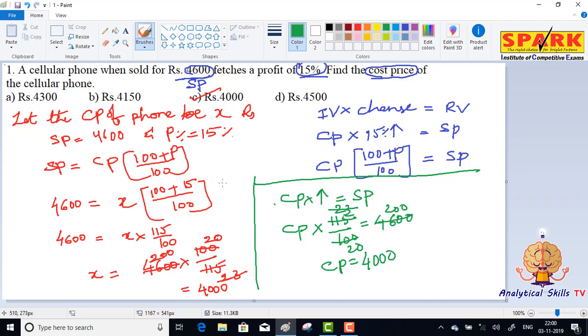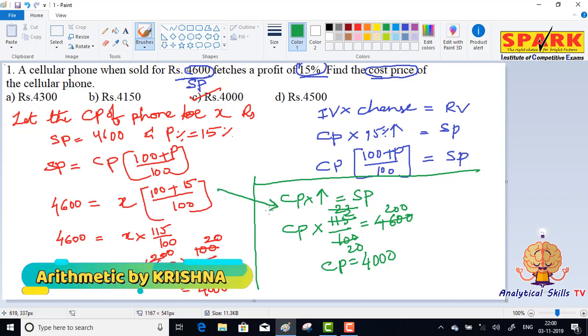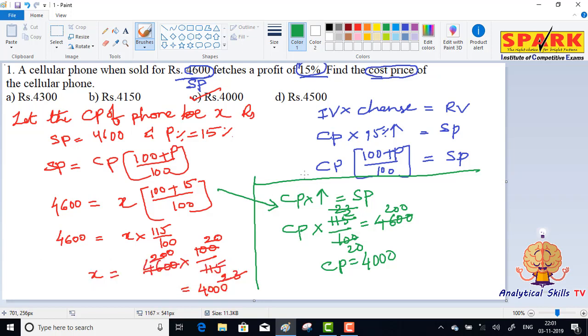So here we have two approaches. This is competitive approach. If you want speed, use competitive approach. This is the academic approach if you want to understand the concept.